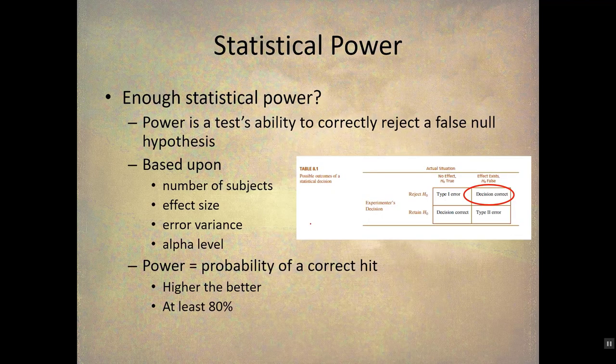Statistical power. Do you have enough statistical power? Statistical power is the ability of a test to correctly reject a false null hypothesis. We're talking about hypothesis testing and our decision rules. Statistical power is the probability that you are in the cell for the correct rejection — the correct decision.